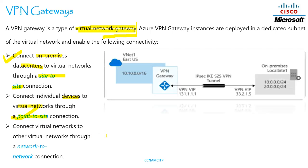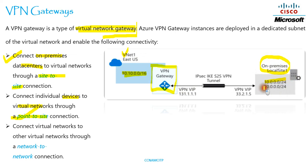For example, we have one VPN gateway here — this is your VPN gateway. You have one network, it is your virtual network one east US. On this side you can see on-premises local site having some IP addresses. Using the VPN gateway, it has created one tunnel — you can see this tunnel — and it is having one VPN virtual IP address and is using some sort of encryption algorithm.